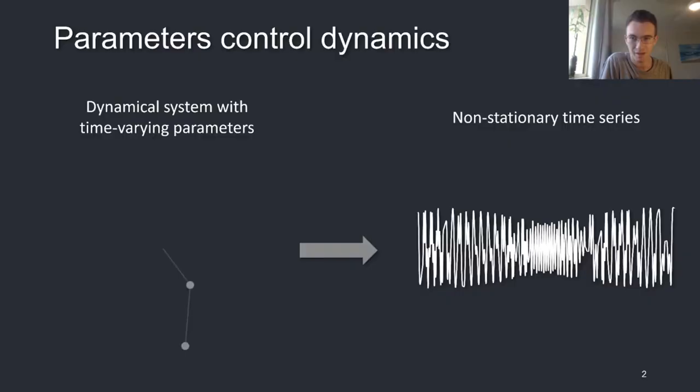Non-stationarity can be thought of as a slow change in how a system is behaving at some faster timescale. For a dynamical system, you can induce non-stationarity just by varying a parameter slowly over time. In this case, we have a double pendulum, and changing the lengths of the two rods gives the time series on the right, which transitions from broad, irregular sweeps into faster, more regular oscillations. Since parameters are tightly coupled to how a system behaves, observing changes in dynamical properties gives us a direct way to infer the underlying variation in the parameters of a generative model.